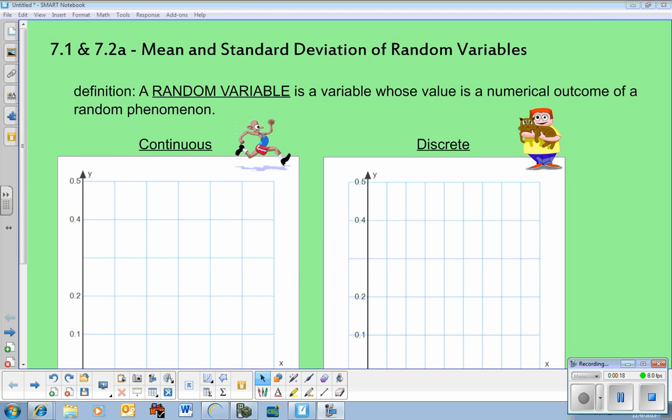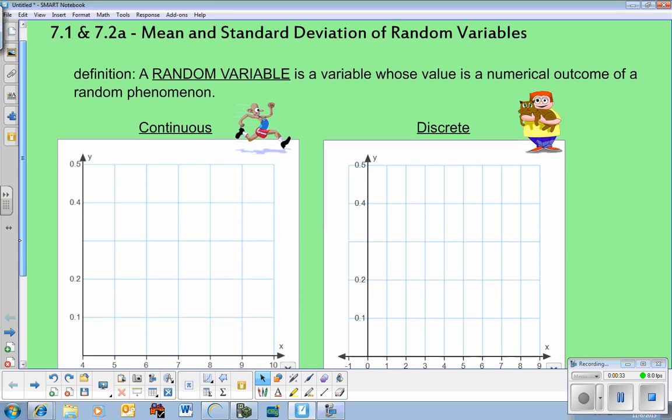You can see the official book definition here, a variable whose value is a numerical outcome of a random phenomenon. You don't really need to worry about that specific book definition. It's just whatever we're measuring, whatever we're looking at in our statistical test.